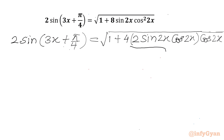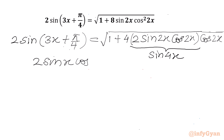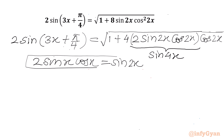Now the bracket 2 sin 2x cos 2x — here we will use the sin 2A double angle formula — so this gives us sin 4x, since 2 sin x cos x equals sin 2x. Now in the LHS we will use the sin(A+B) formula.